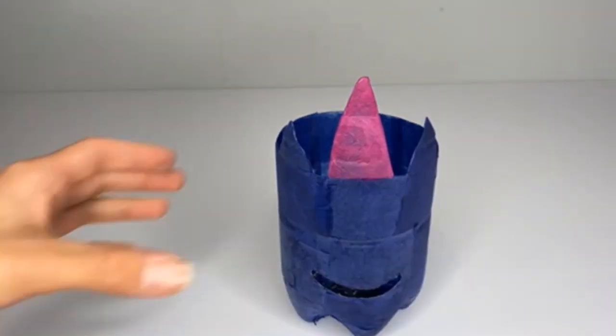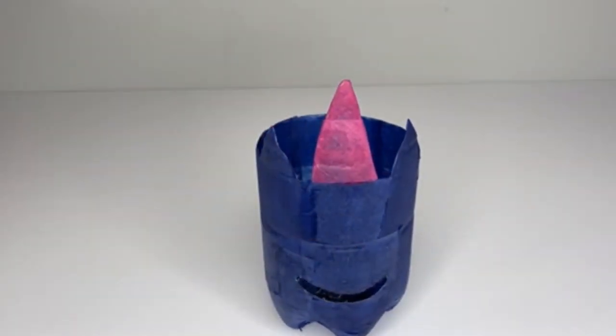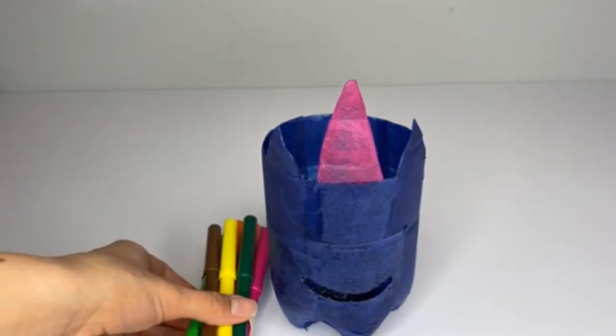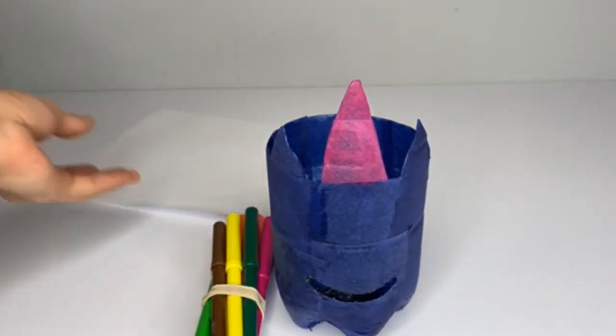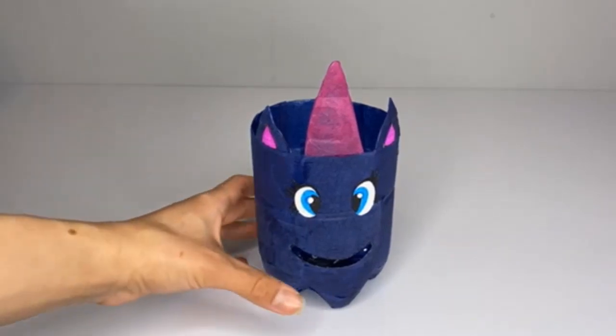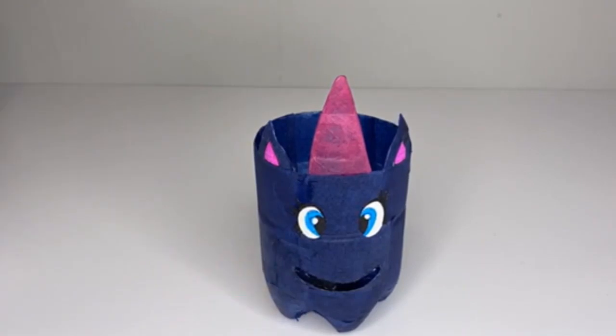You should now have something that looks like this. Now that the base of your character is finished, you can decorate it using colored marker pens or you can cut out features such as eyes and teeth from paper. Here is what my finished character looks like. As you can see, I cut out a pair of eyes and ears and then stuck these on.